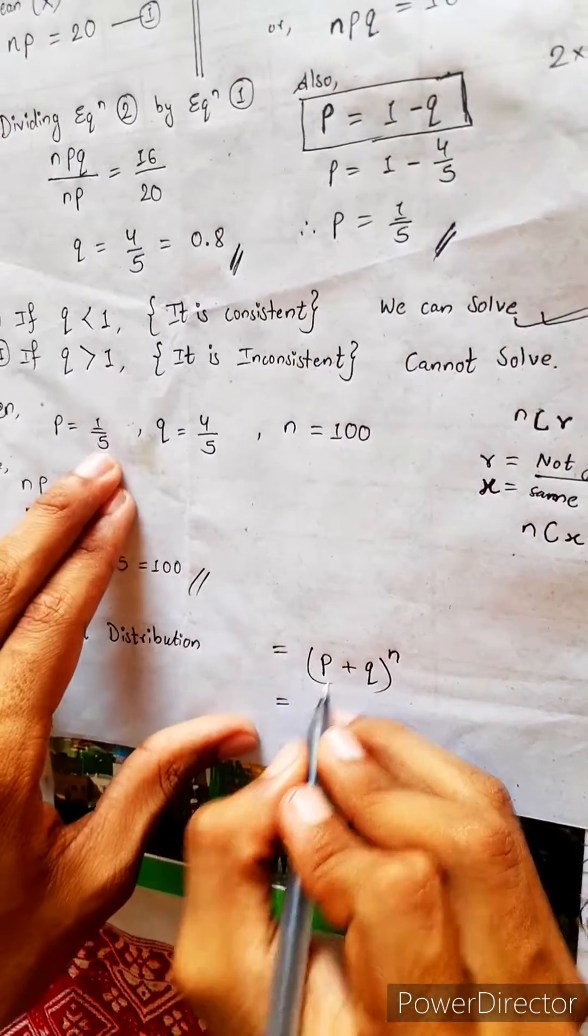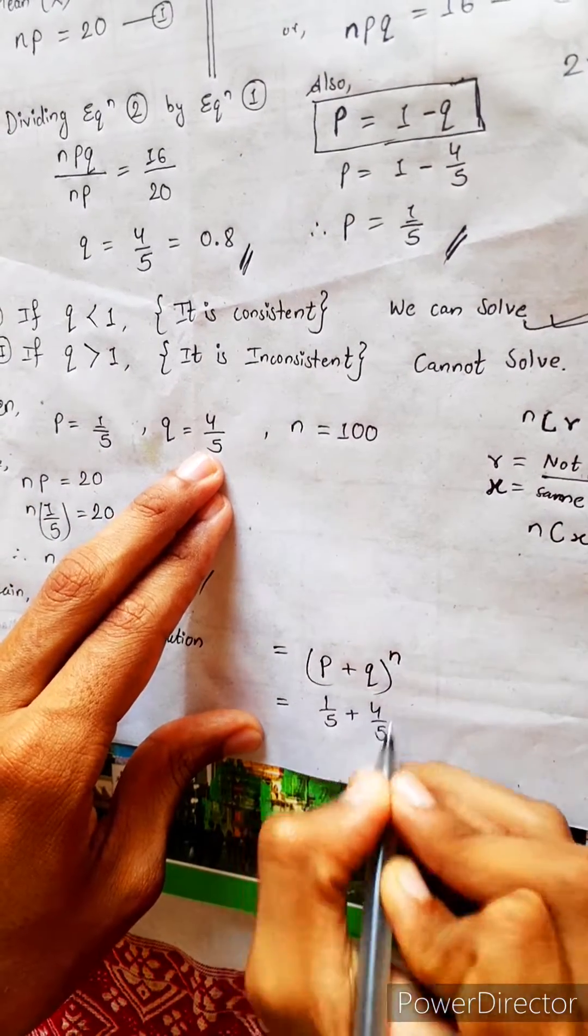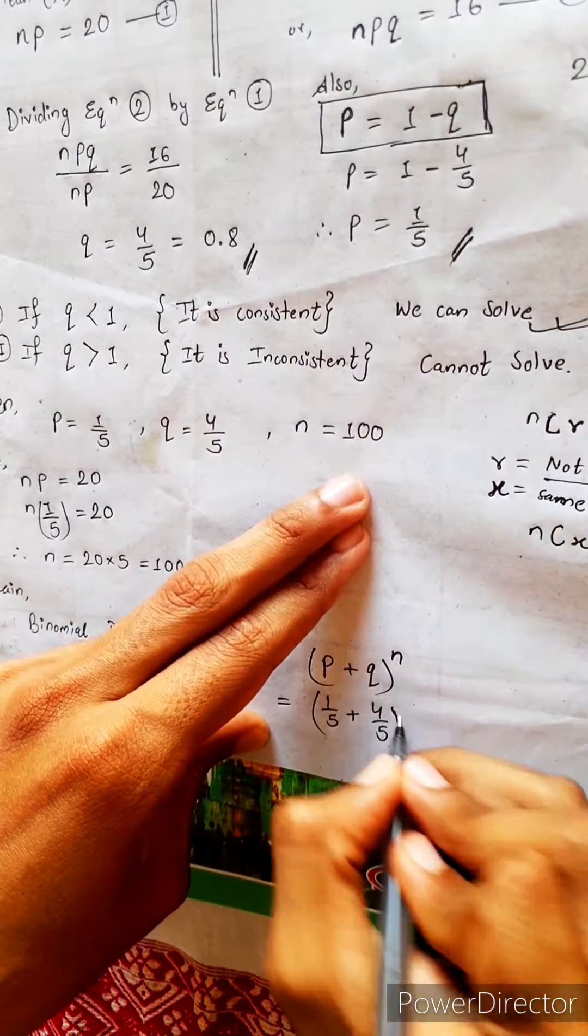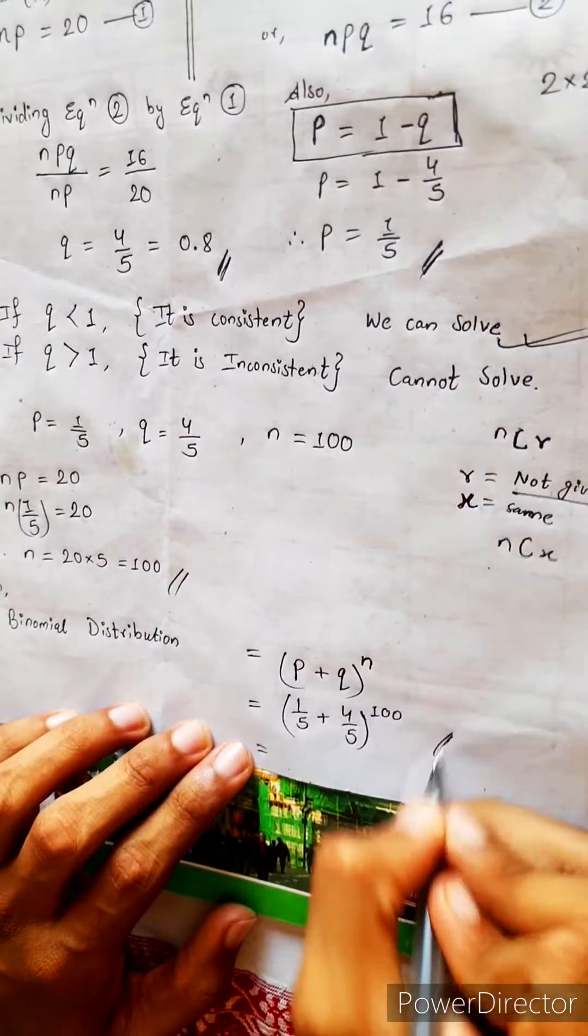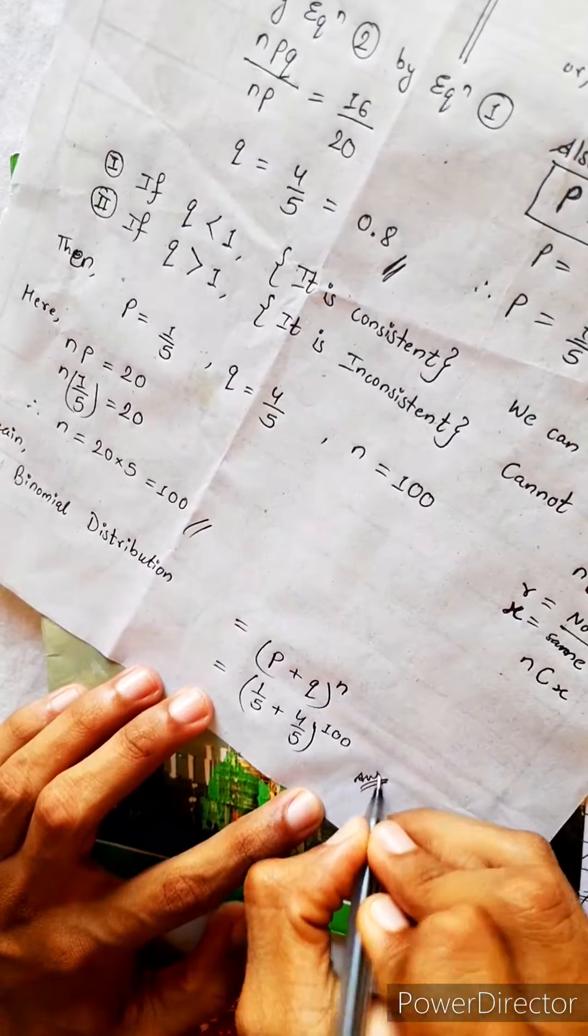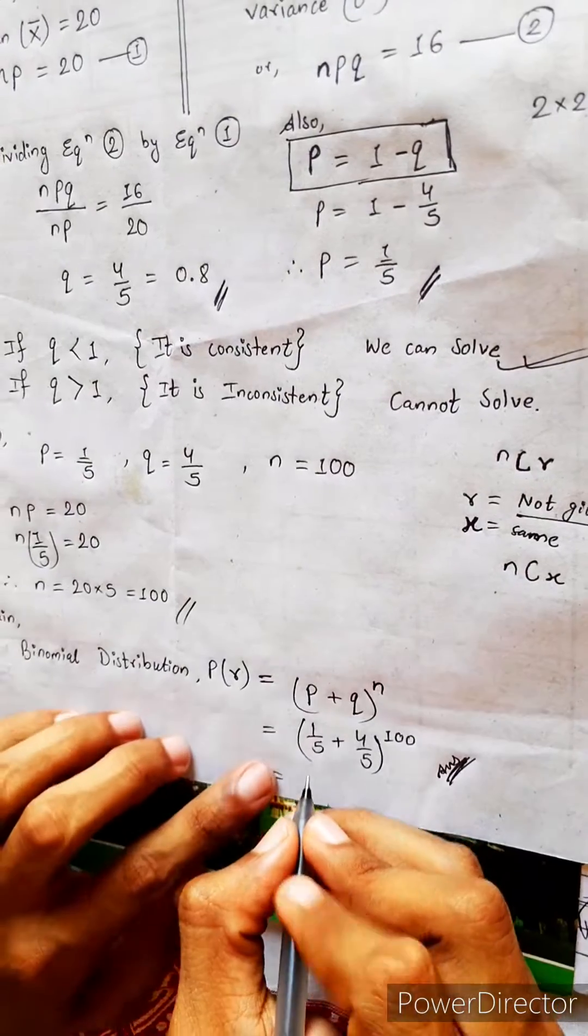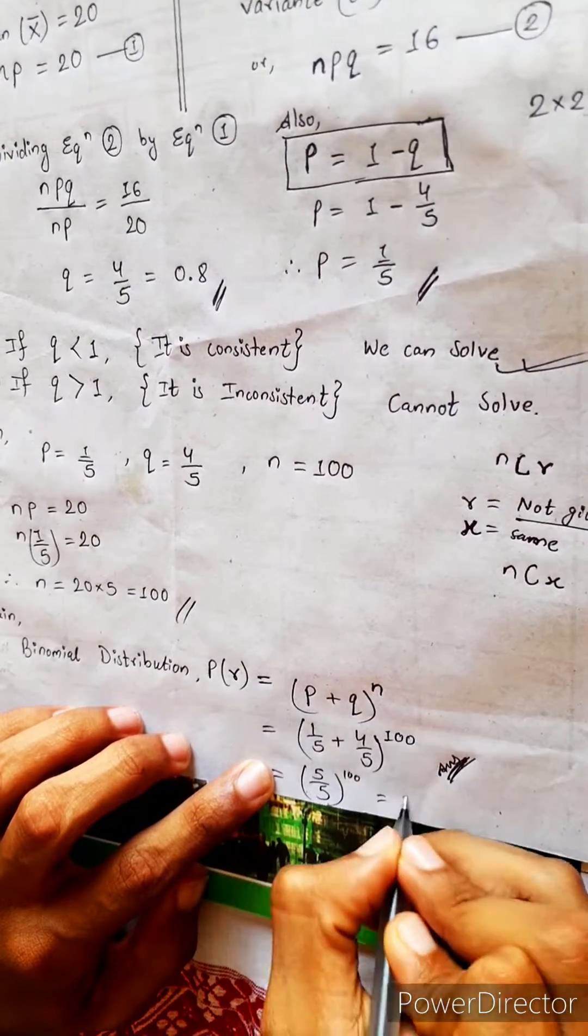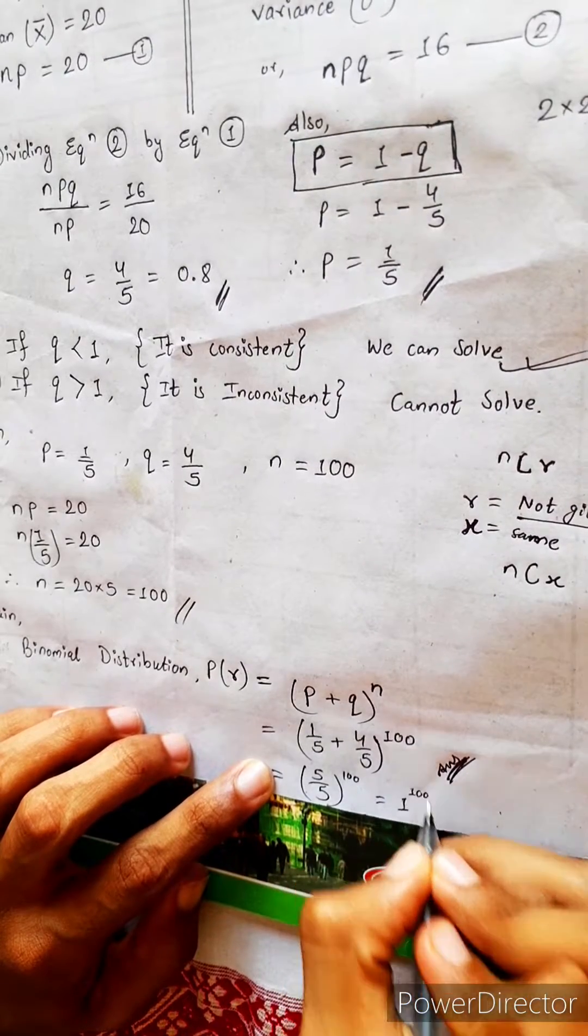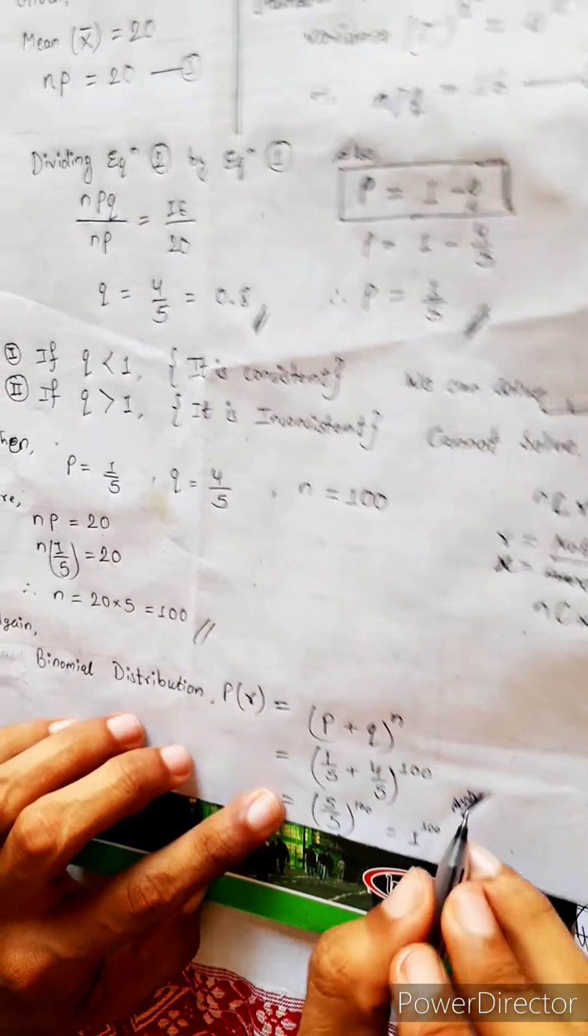P 1 by 5, Q 4 by 5, N 100. If you want to solve, you can solve also. But leave it as answer. Answer. This will be how much, you know. It will be 5 by 5 power 100 equals to 1 power 100 equals to 1. So this binomial distribution will be 1 at last. So leave this answer.